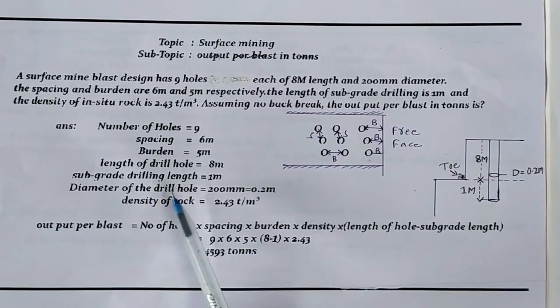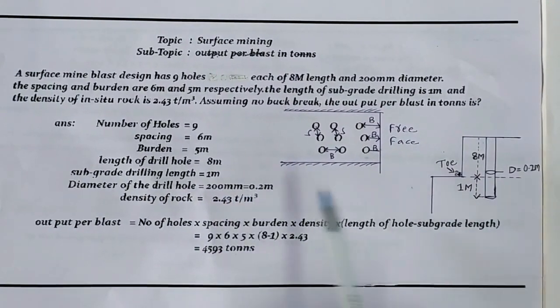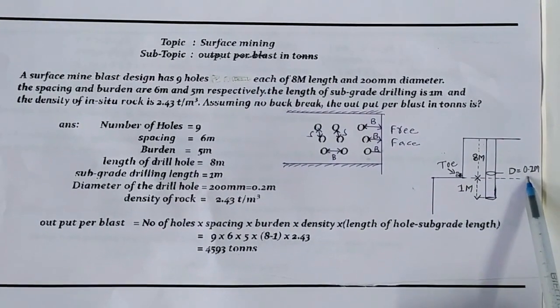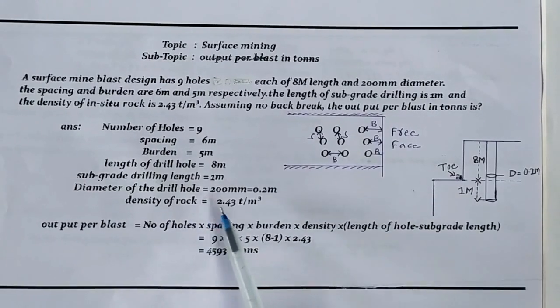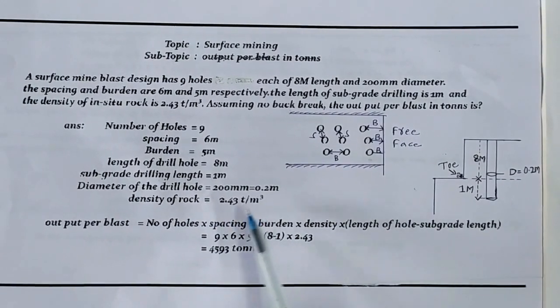The diameter of the drill hole is 200mm or 0.2 meters. The density of rock is 2.43 tons per cubic meter.